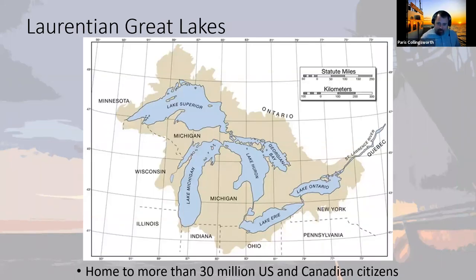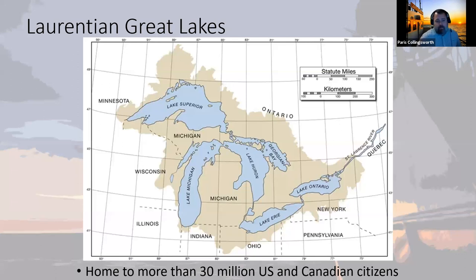This is a map of the Laurentian Great Lakes. The brown area represents the watersheds — the land that drains into the lakes. The Great Lakes Basin is home to more than 30 million citizens in the U.S. and Canada. The ecosystem services provided by the lakes — things like water supply, transportation, and fishing — serve a really large number of people.